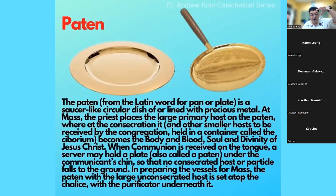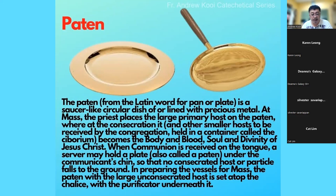On top of the chalice normally you will have a paten. The paten is a round dish where the host will be placed, and where the consecrated host will also be placed during Mass. The bigger host is the one used by the priest. Sometimes, especially if communion is received on the tongue, a server may hold a plate — also called a paten — placed underneath the chin to prevent the host from falling onto the ground.